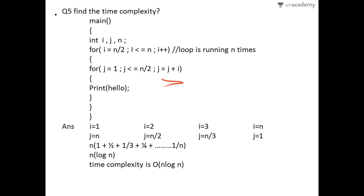For the next value of i which is 2, j runs n/2 times since j increments by i. For i equals 3, j runs n/3 times. For the last value i equals n, j runs 1 time since n/n equals 1. Adding all these values and taking n common gives n × (1 + 1/2 + 1/3 + 1/4 + ... + 1/n). This series is the harmonic series equal to log n, so the time complexity is O(n log n).